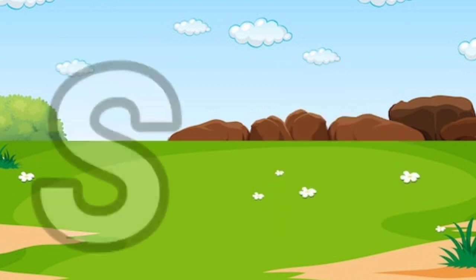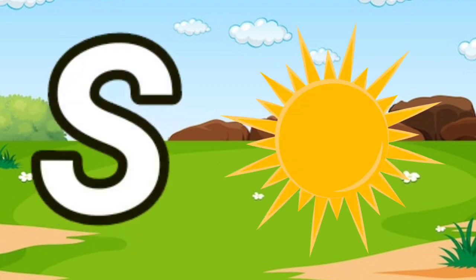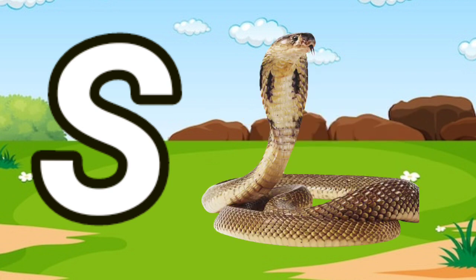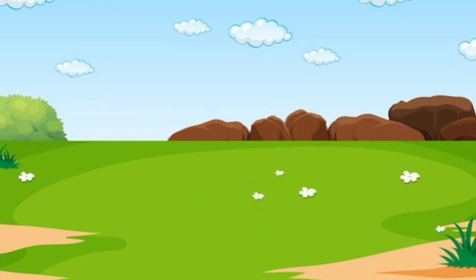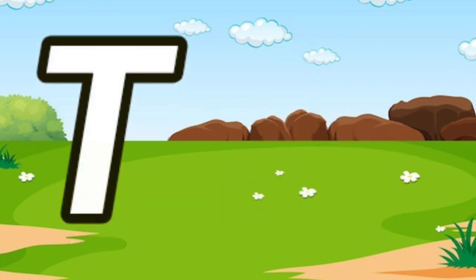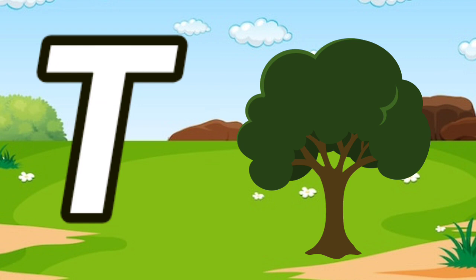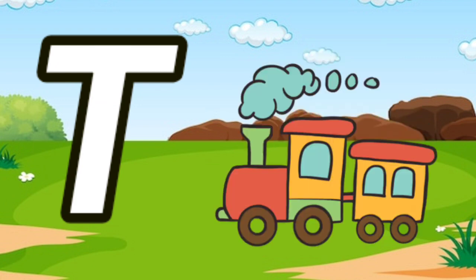S is for Sun. S, S. Sun. S is for Snail. S, S. Snail. T is for Tree. T, T. Tree. T is for Train. T, T. Train.